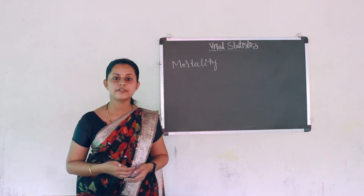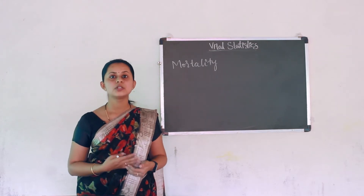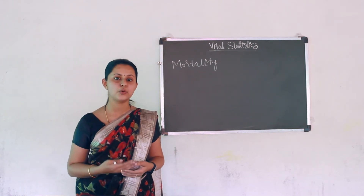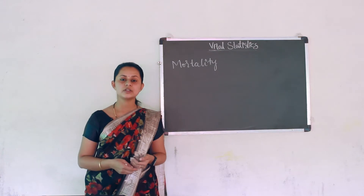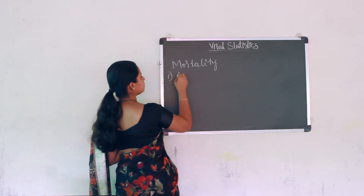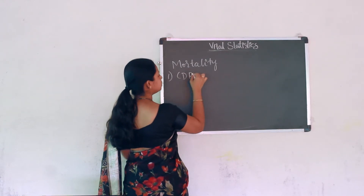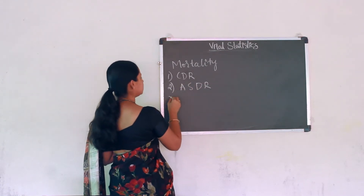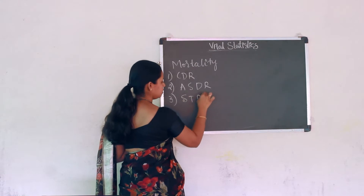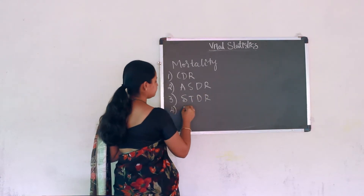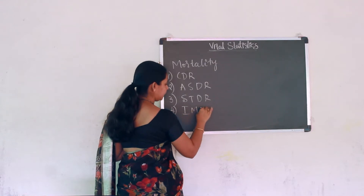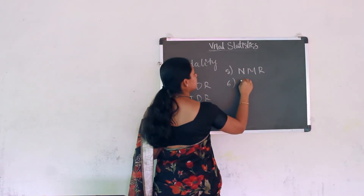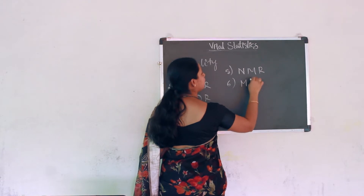Mortality refers to deaths occurring in the human population. This death may occur due to various causes — sickness, accident, old age, etc. We shall study the measures of mortality rates: first, crude death rate; second, age specific death rate; third, standardized death rate; fourth, infant mortality rate; fifth, neonatal mortality rate; and sixth, maternal mortality rate.